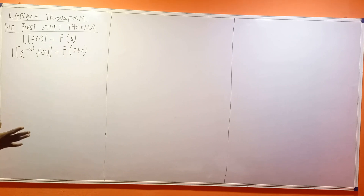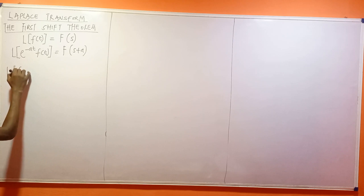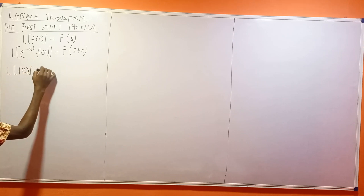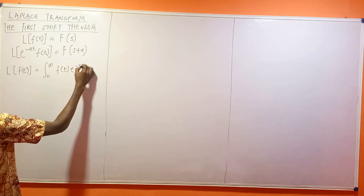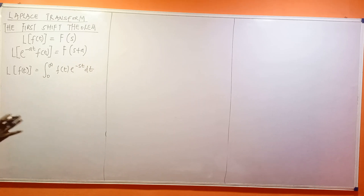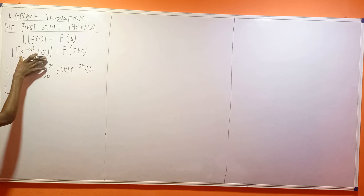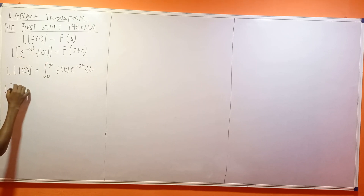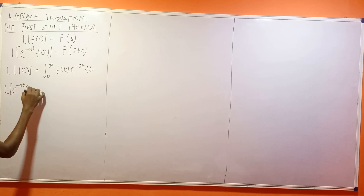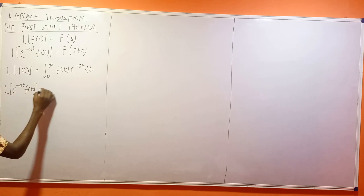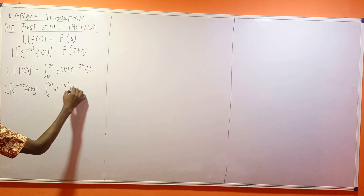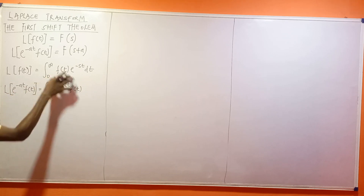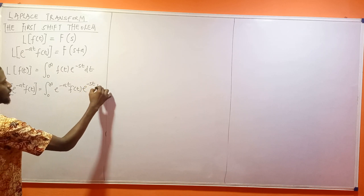Let me show this to you using integration. The Laplace transform of f(t) on a normal day is the integral from 0 to infinity of f(t) exponential minus st dt. This is the Laplace transform in terms of the integral. So what would then become the Laplace transform when we have exponential to the power of minus at times f(t)? This will be the integral from 0 to infinity. Your f(t) is now exponential minus at times f(t), and then we have our exponential minus st dt.